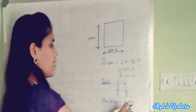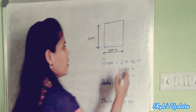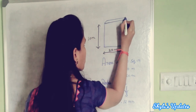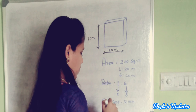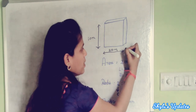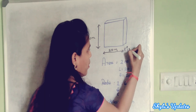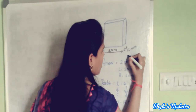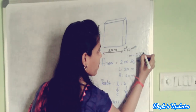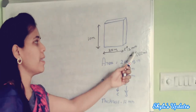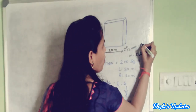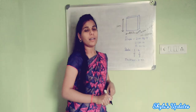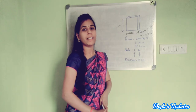The thickness is 12 mm as shown in the diagram. We know that 1 meter is equal to 1000 mm, so we have to convert 12 mm into meters. 12 mm is equal to 0.012 meters. These are all the given data we will use to calculate the quantity of plaster.